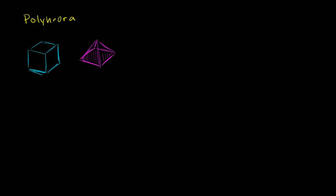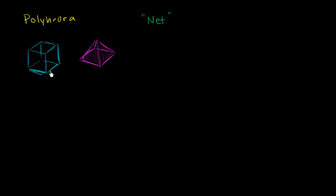What I want to think about are nets of a polyhedron. So what is a net of a polyhedron? Well, one way to think about it is if you viewed this as made up of cardboard and you were to unfold it so it would become flat. Or another way of thinking about it is if you were to cut out some cardboard or paper and wanted to fold it up into one of these figures. Each of these polyhedra has multiple different nets that can be folded up into this three-dimensional figure.